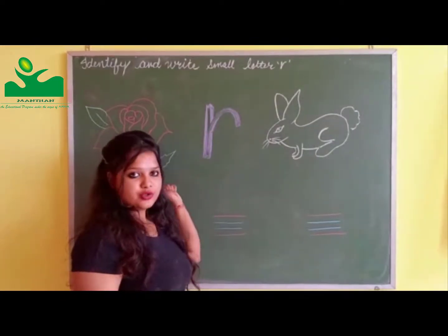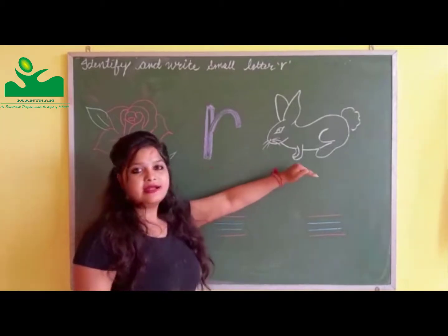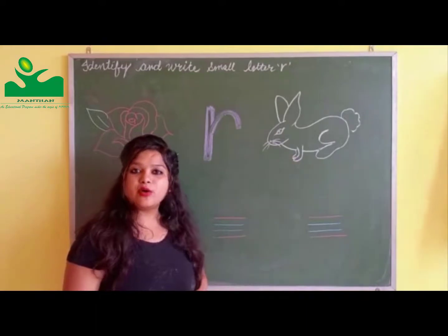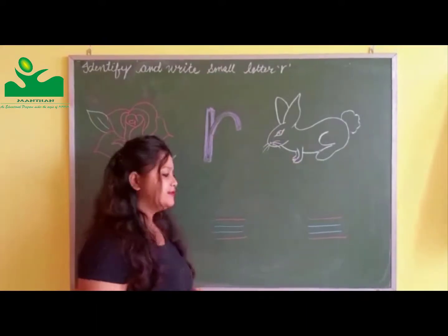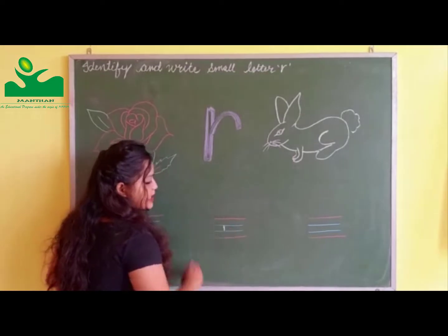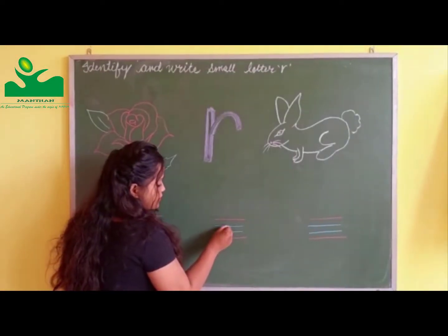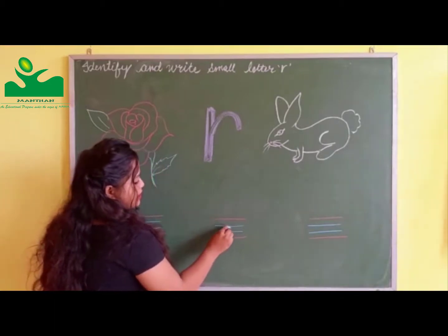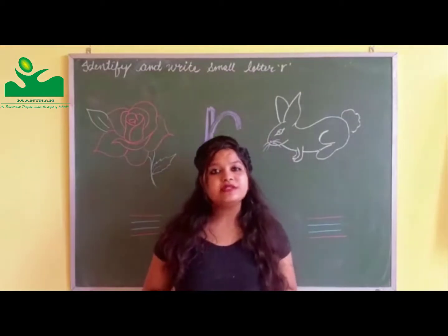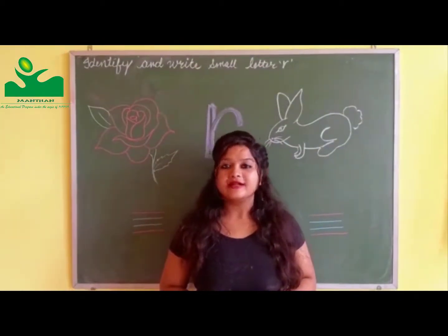R for Rose. R for Rabbit. Now we will write small letter R on the board. First we will make a starting line like this. From here, we will make a curve. R. R for Rose. R for Rabbit.